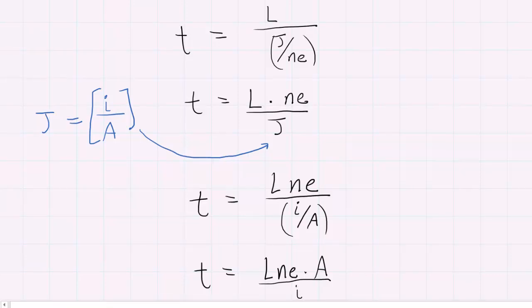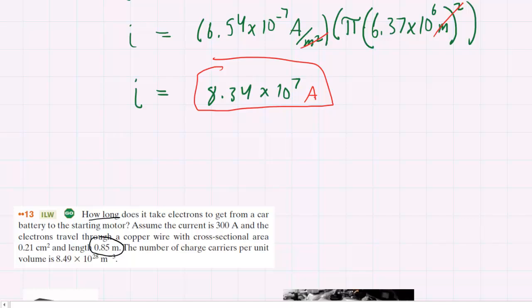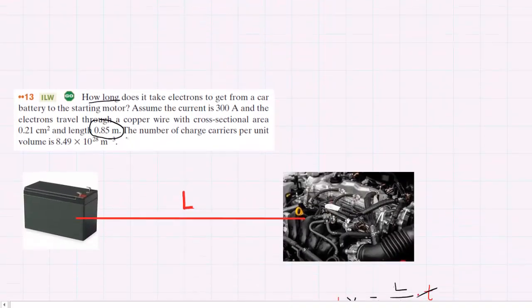Here's our expression. We just have to plug in the known values. We need L, n, e, area, and current. We have the length, the number of charge carriers per unit volume n, current I, and cross-sectional area of 0.21. We'll plug these in and need to convert centimeters squared to meters squared.